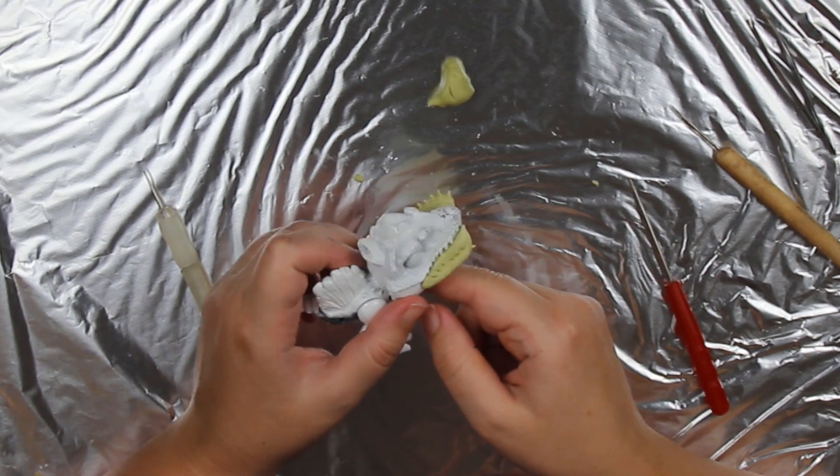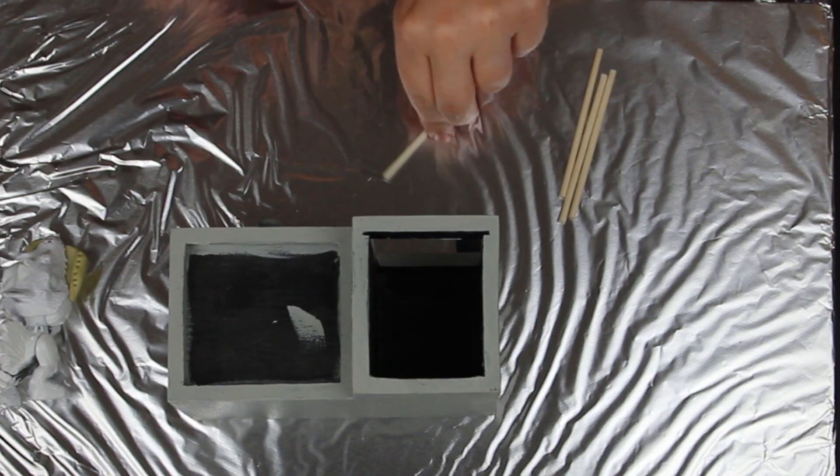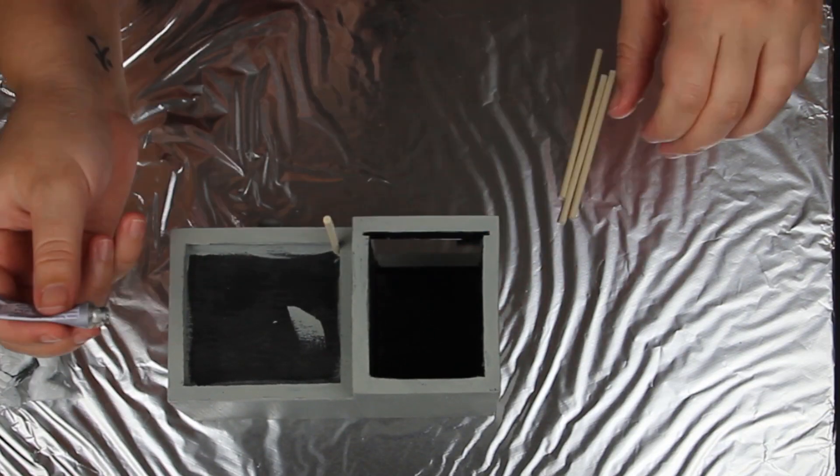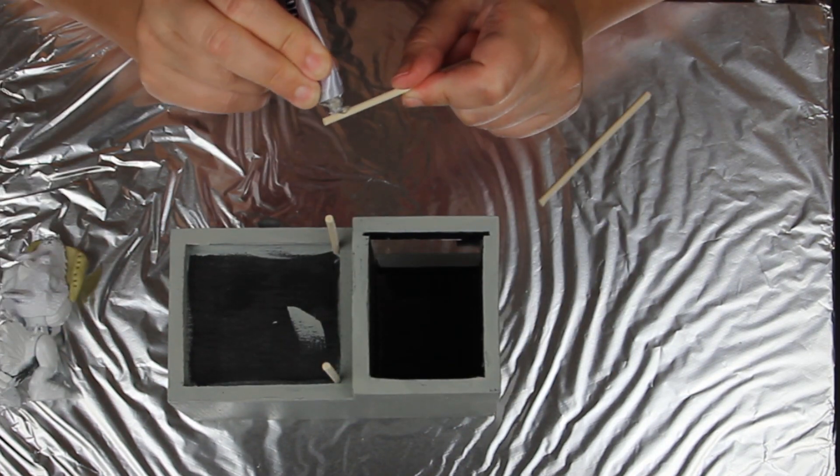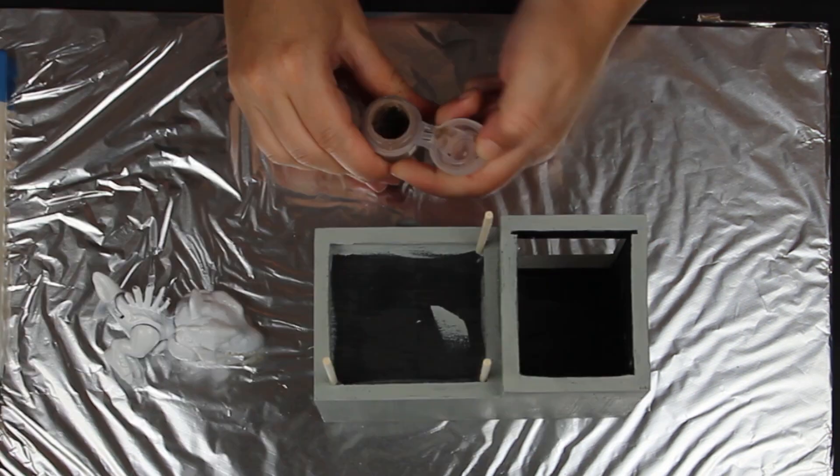And there's the jaw done. So now I'm building the environment box. So I've painted the box grey and I'm now building the fence. I'm using skewers and I'm just gluing them down with E6000.